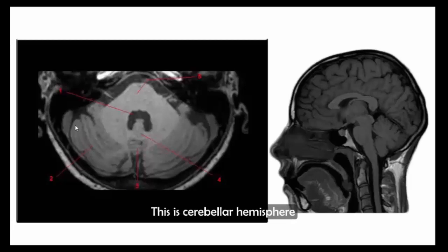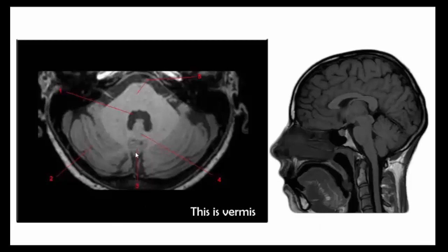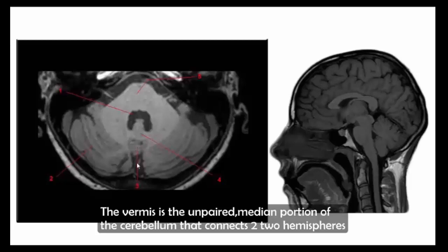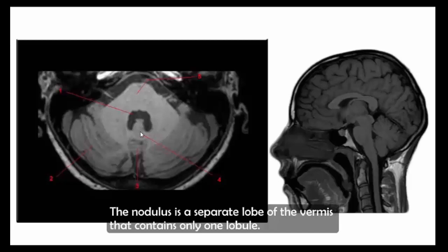This is the cerebellar hemisphere. The cerebellar hemispheres are two divisions of the cerebellum on either side of the vermis. This is the vermis — the unpaired median portion of the cerebellum that connects the two cerebellar hemispheres. This is the nodulus. The nodulus is a separate lobe of the vermis that contains only one lobule.